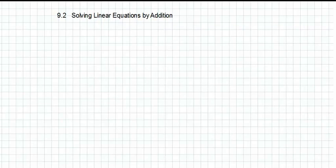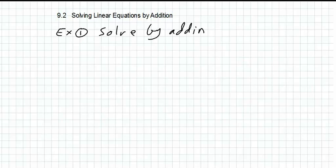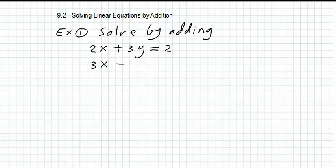The first example: solve by adding. You will be given two equations. Every one of them is a line. These two lines may intersect, be parallel lines, or be coincide lines. In our case, to solve it we need to cancel one of the variables. We decide first which variable to cancel — suppose that we want to cancel the x variable.